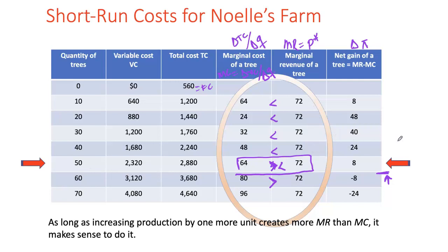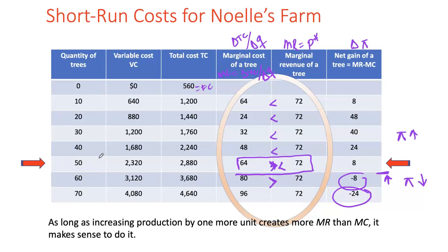After the first 50 trees, producing 10 additional trees means marginal cost is now higher than marginal revenue — each of those last 10 trees causes profit to go down by $8. Being a rational economic agent, she would never want that and would stop at 50 trees. Her optimal quantity is where marginal revenue equals or at least exceeds marginal cost, giving us 50 trees. Whether you find the optimal quantity by calculating total profit or through marginal analysis, the answer is the same.